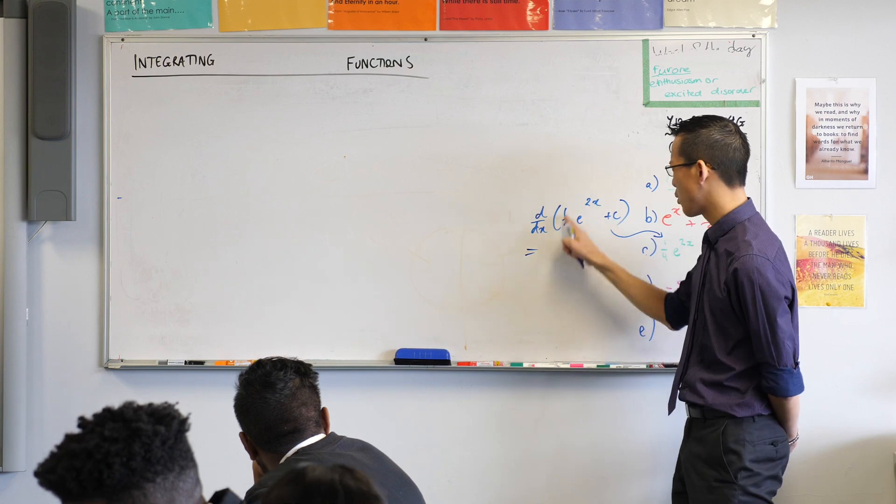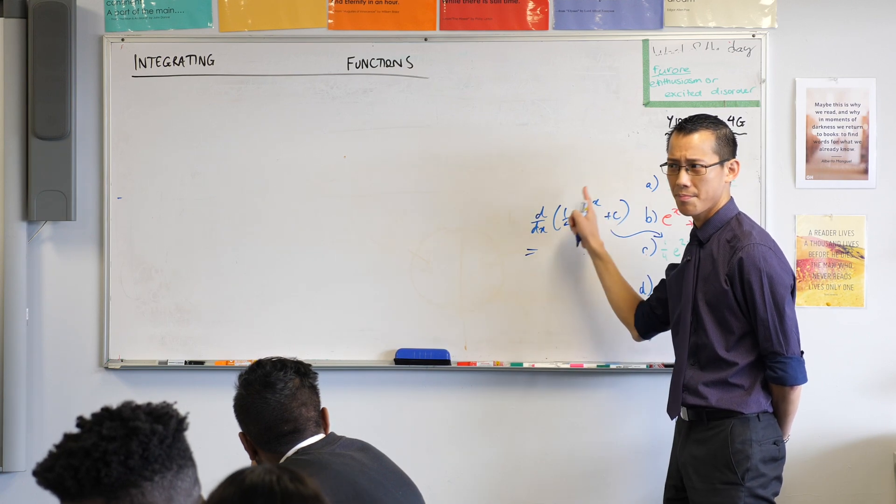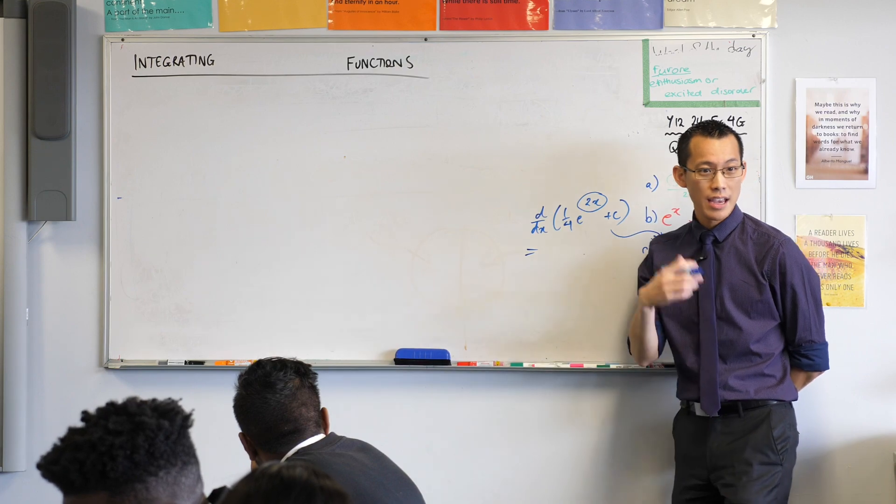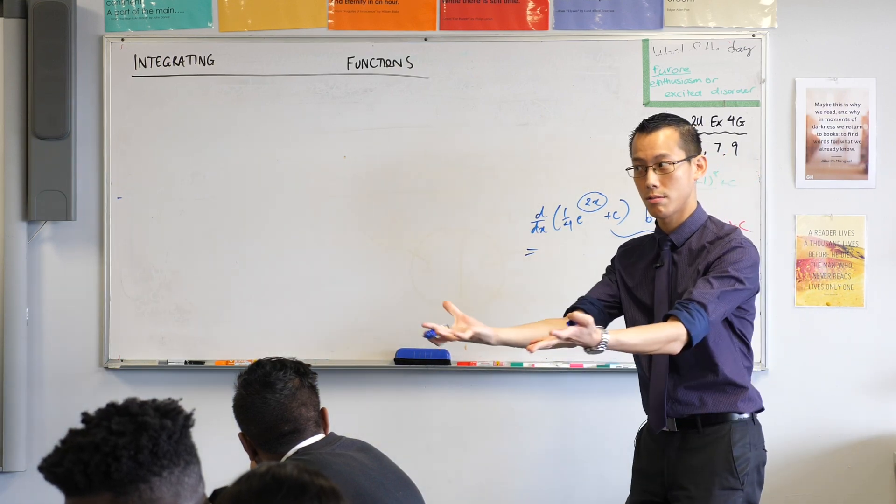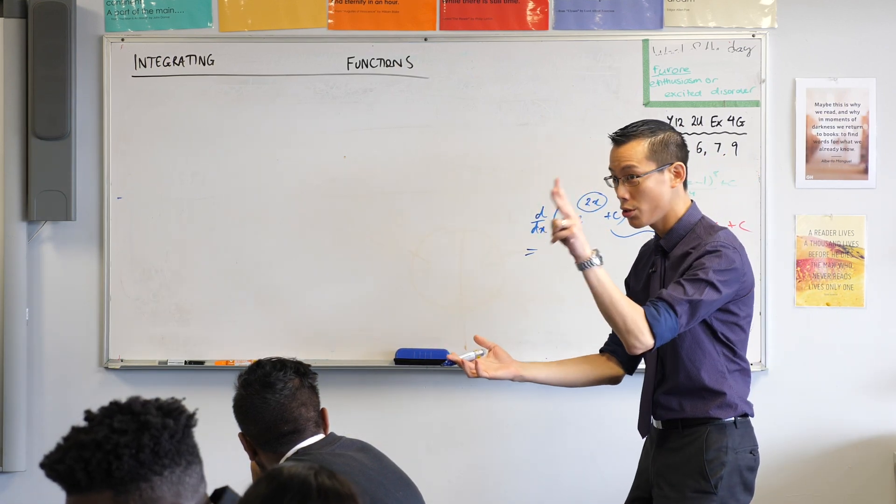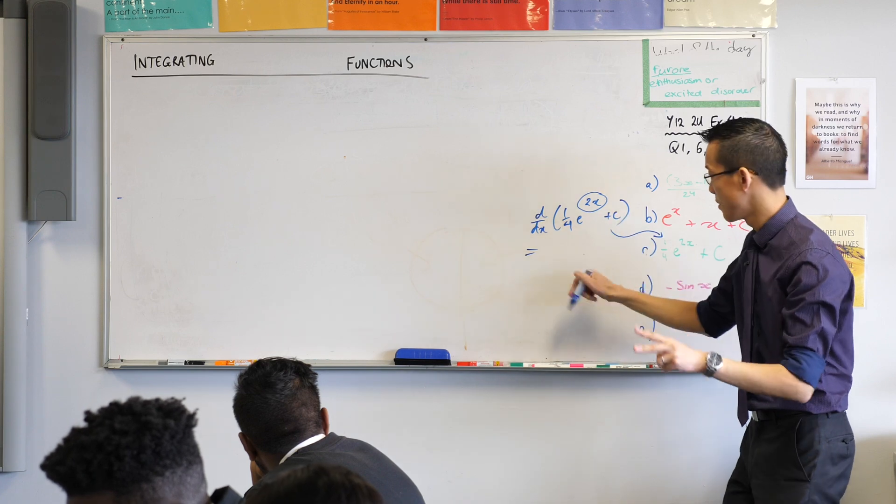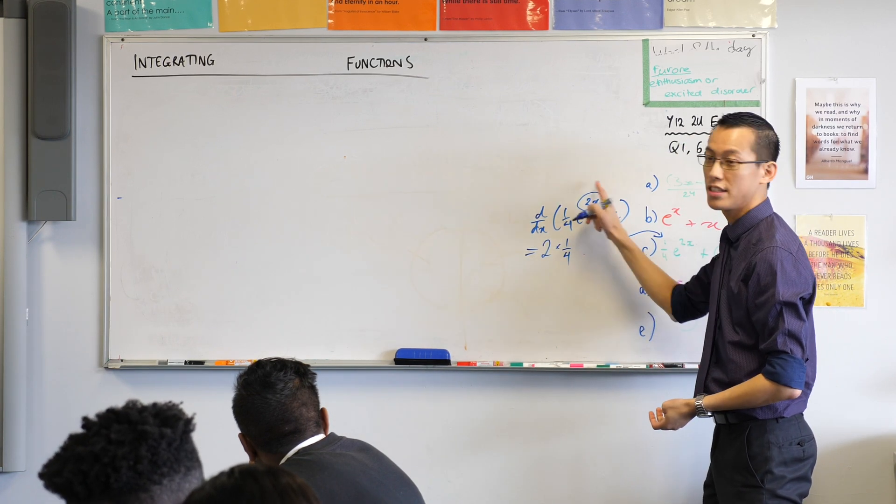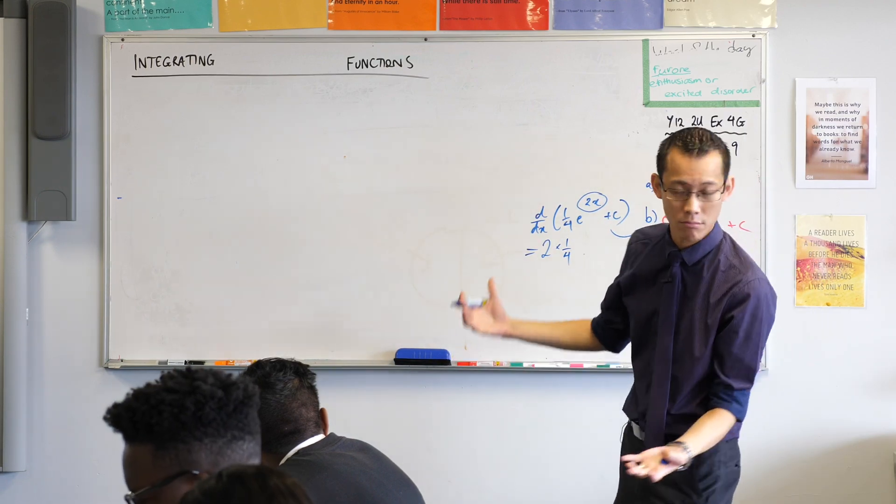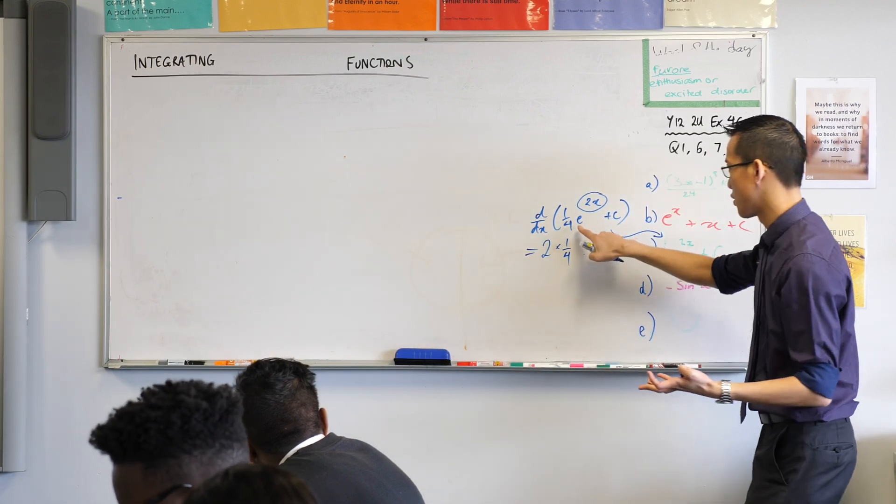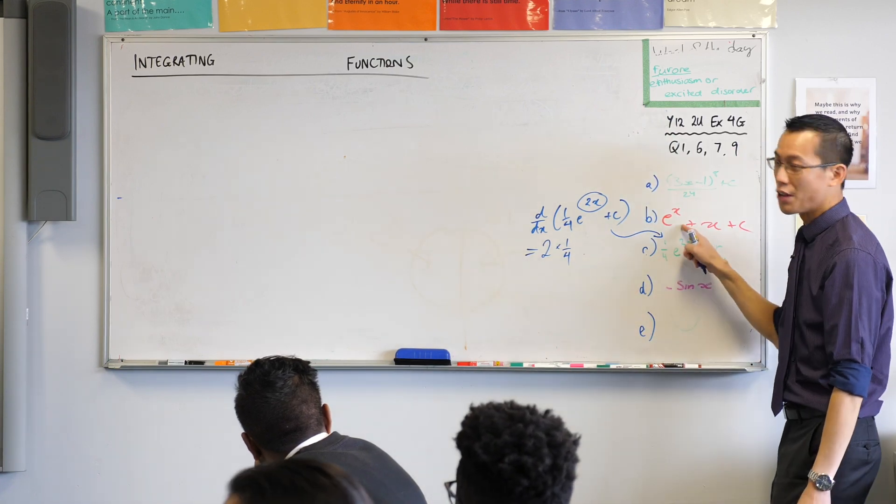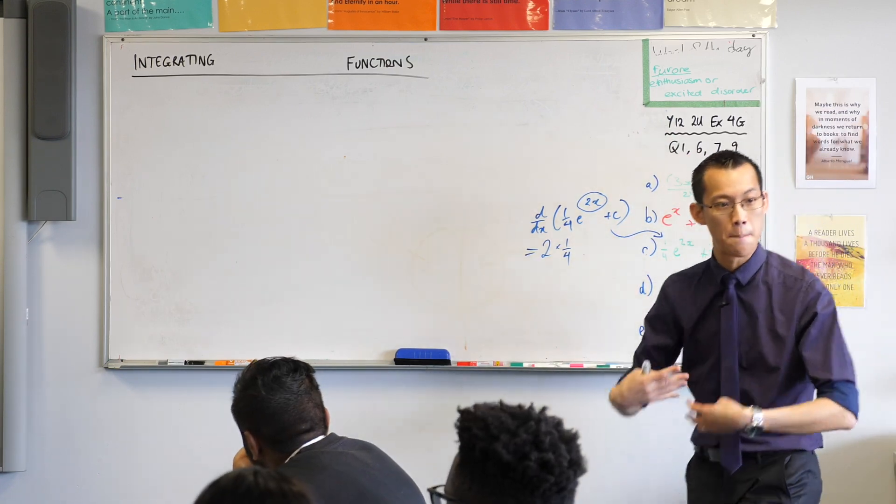I'm differentiating. What rule do I use with this guy? I use chain rule, right? There's an inside function there. Its derivative in this case is 2. So I'll put that 2 out the front. Everything else just kind of follows because having dealt with the inside, what is the outside function? It's an e to the power of something. We already know that e to the power of something differentiates back into itself.